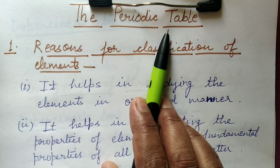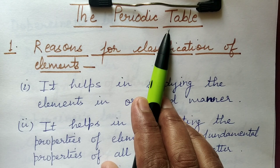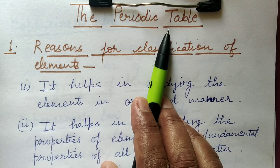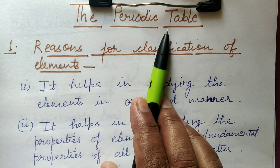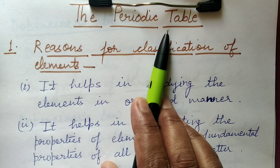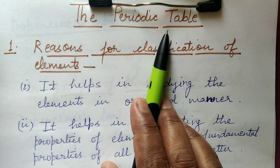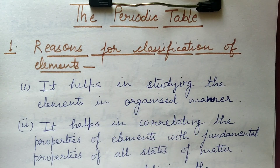Actually, what happened was that by the end of the 18th century, when more and more elements were discovered, it became a little difficult to study those elements individually. So it was thought to classify the elements in a way that elements with the same properties were put together. With this thinking, the classification was done and it helped in many ways.